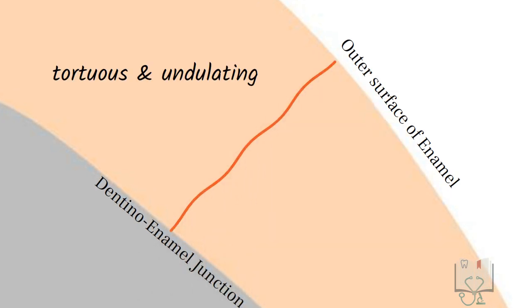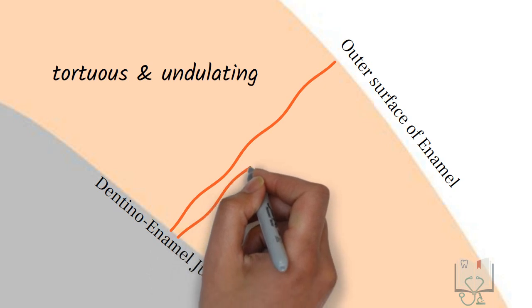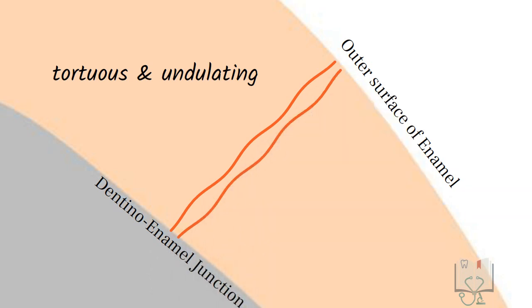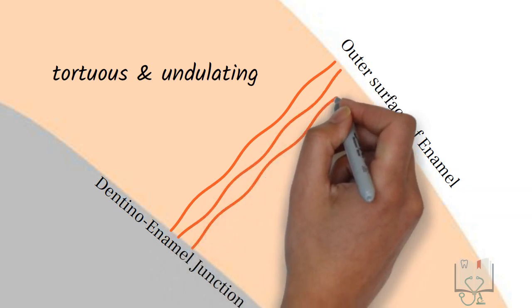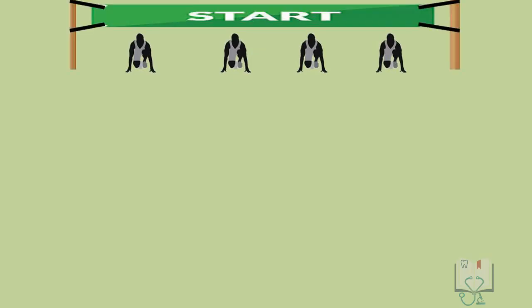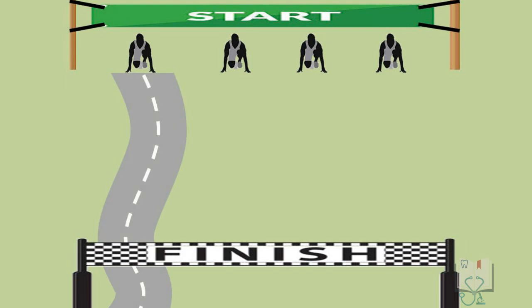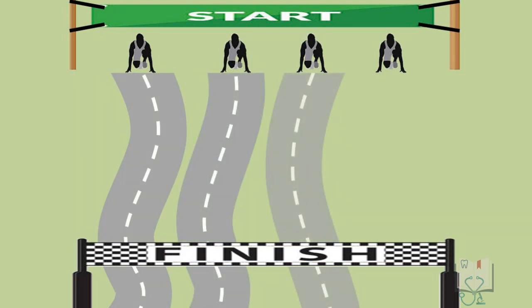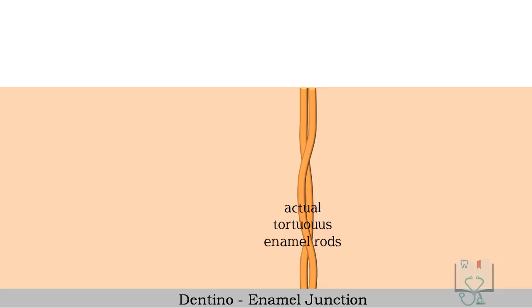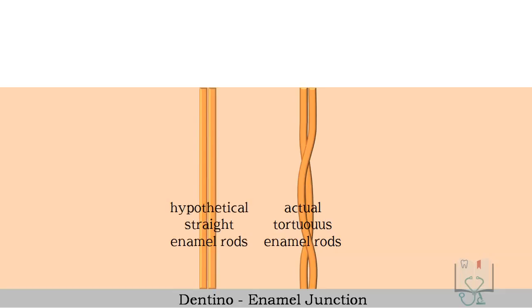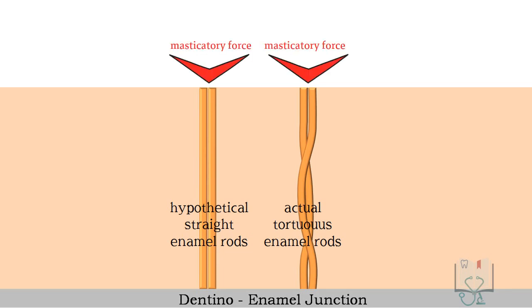Moreover, adjacent enamel rods have dissimilar local orientations even if the general direction is the same. Enamel rods run from the dentino-enamel junction to the enamel surface in a tortuous course, and that course differs for individual rods. This tortuous course, rather than a straight one, is thought to be a functional adaptation against masticatory forces to minimize the risk of cleavage and cracks.